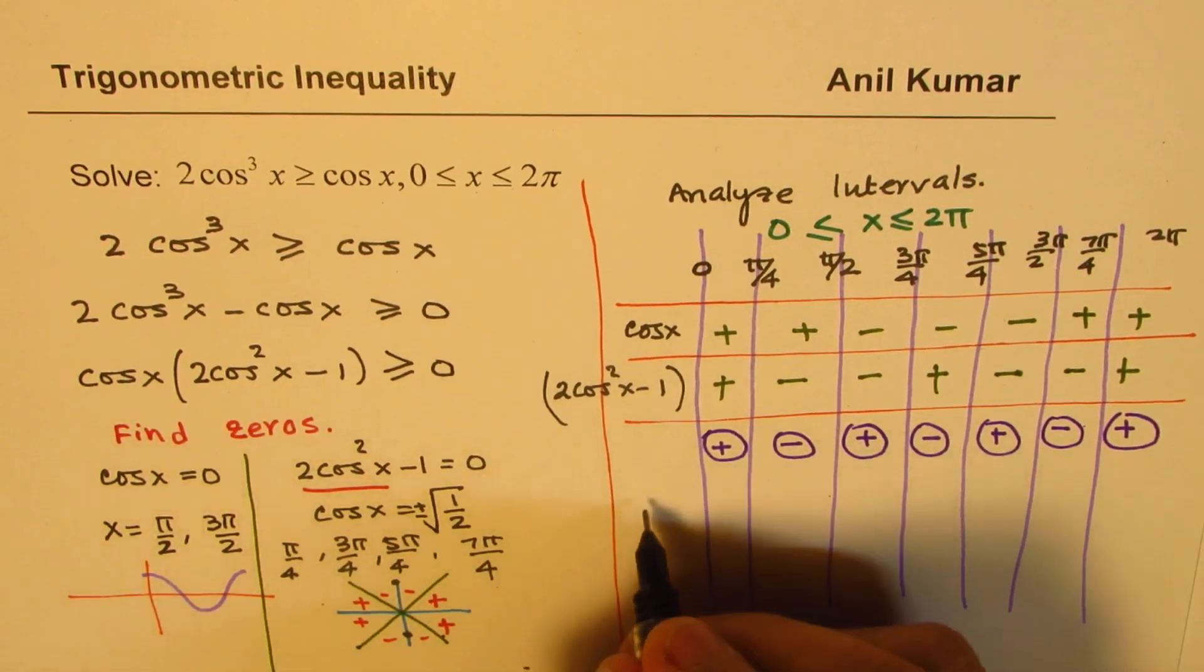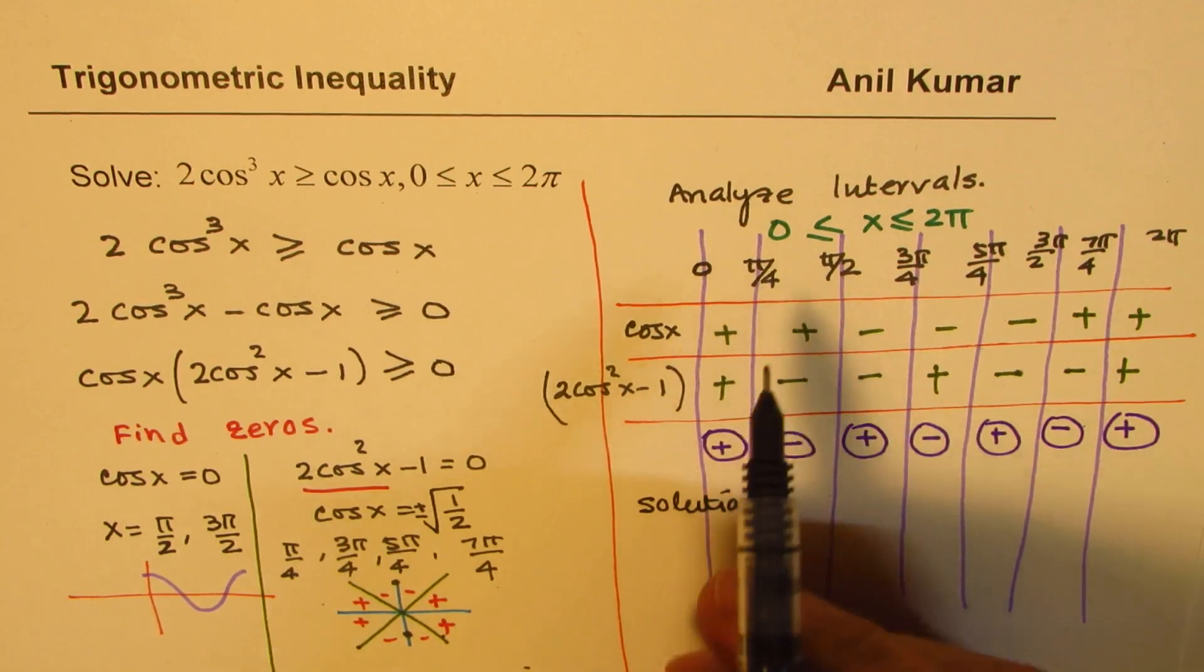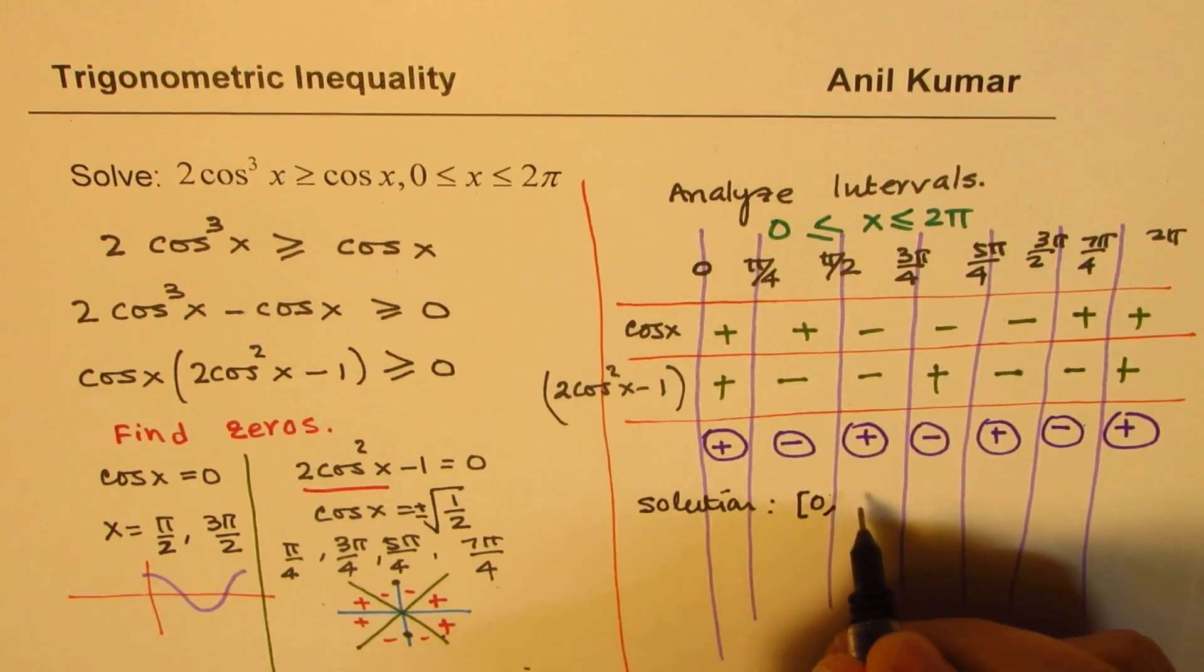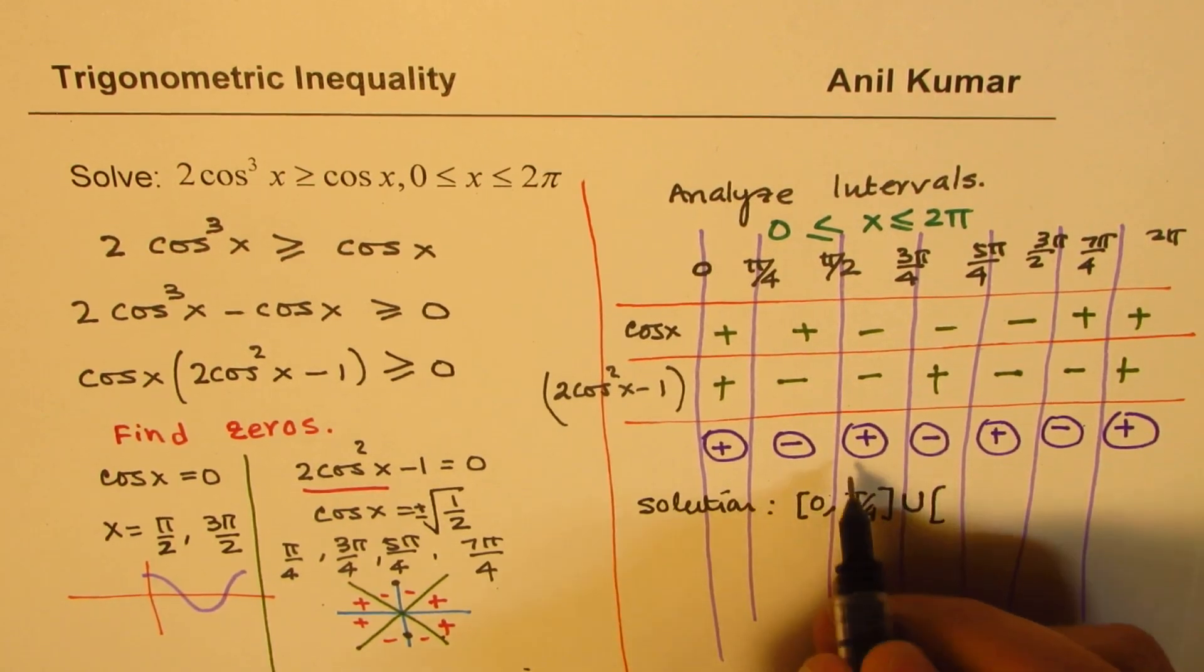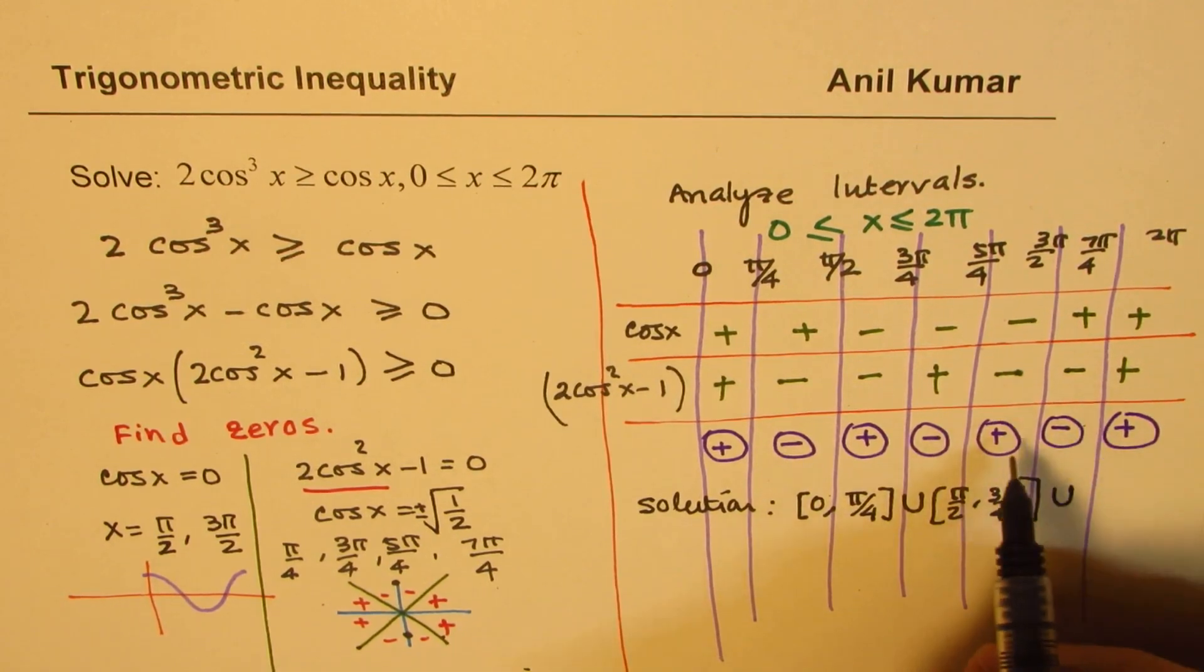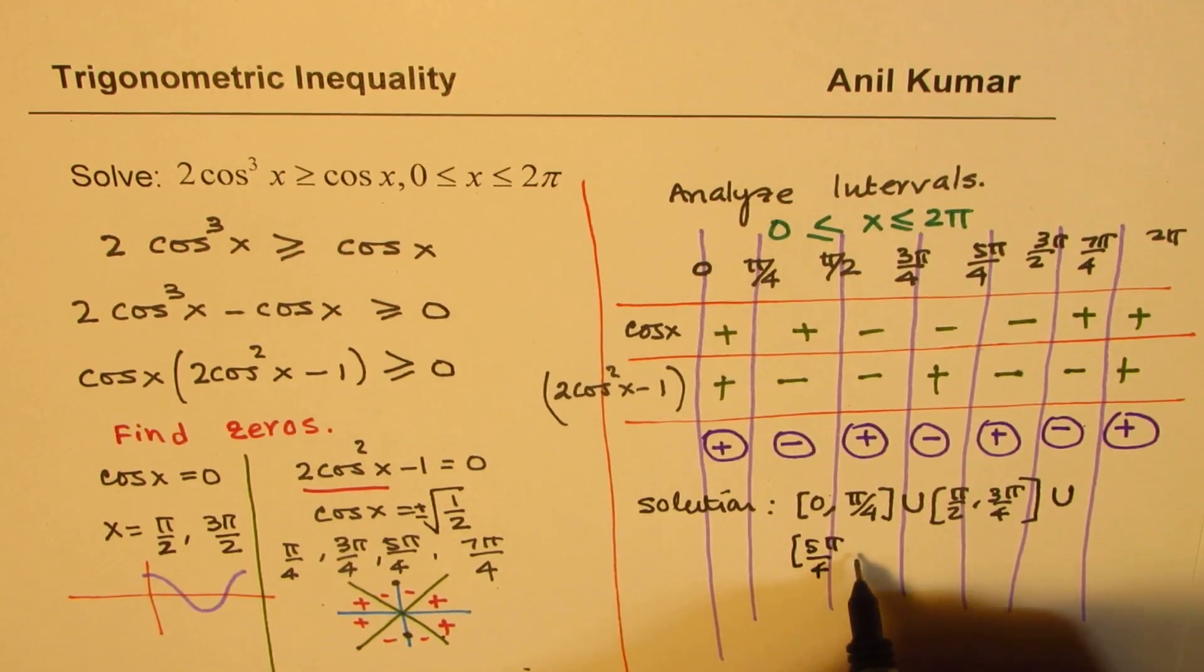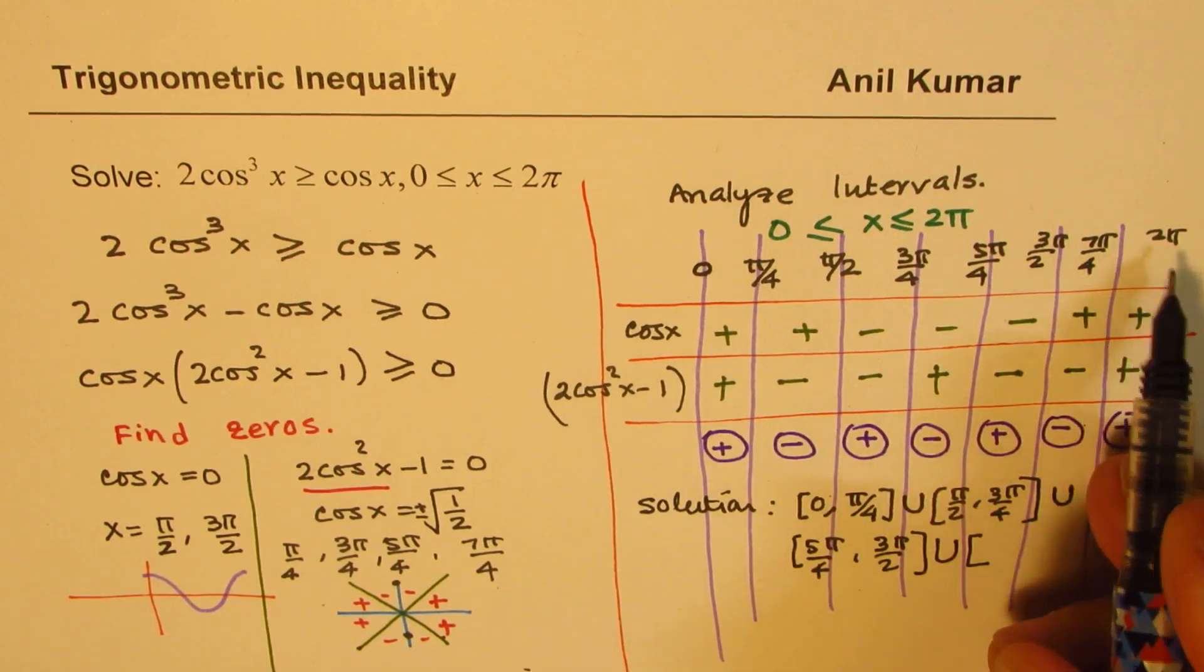So the solution for this is from 0 to π/4, both included since we are saying greater than equal to. So we will write 0 to π/4, union. Next is from π/2 to 3π/4, union. And then we have from 5π/4 to 3π/2. And then we have from 7π/4 to 2π.